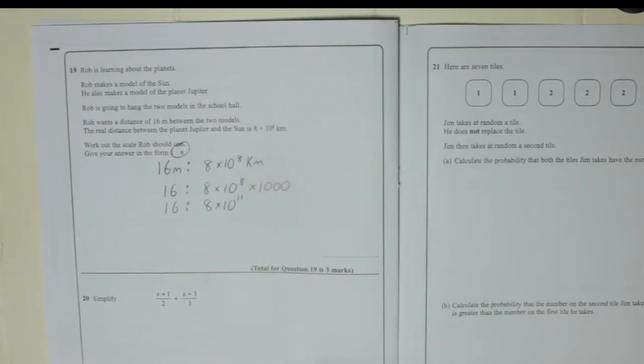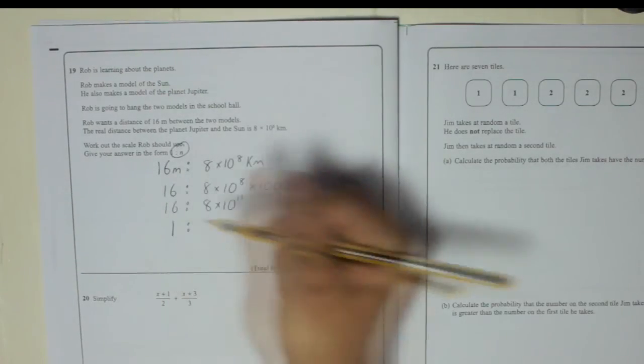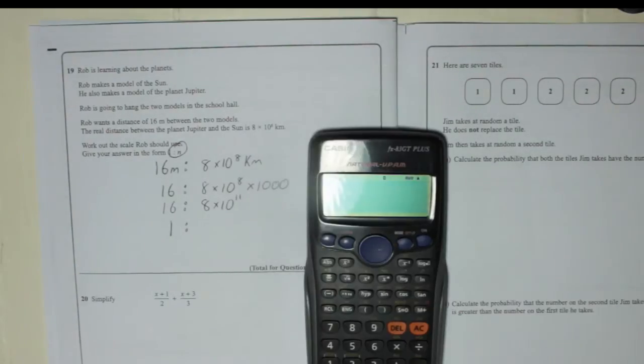Now the question wants us to give a ratio as 1 to something. So to give that as a 1, we need to divide by 16. So 8 times 10 to the power of 11, divide by 16.